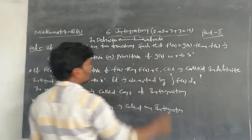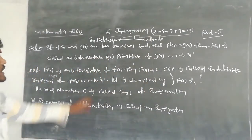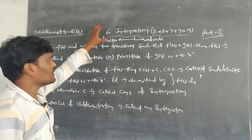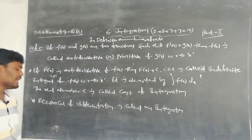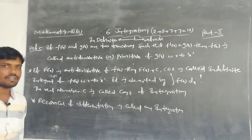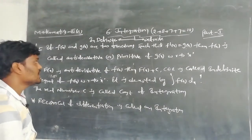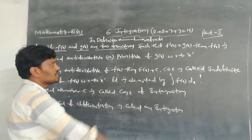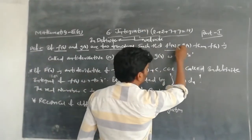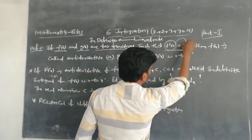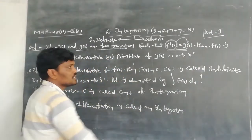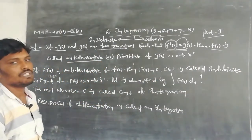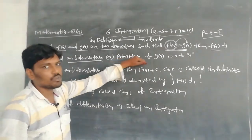Today we discuss about indefinite integration. What is the meaning of indefinite integration? Indefinite integration is nothing but the reciprocal of differentiation. Here, f(x) and g(x) are any two functions such that f'(x) = g(x) — that is, the derivative of f(x) is equal to g(x) — then f(x) + c is called the anti-derivative of g(x), or the primitive of g(x).